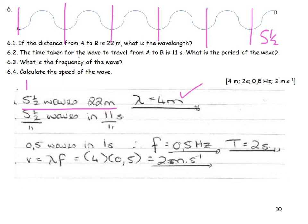The time taken for the wave to travel from A to B is 11 seconds. So 5 and a half waves take 11 seconds. What is the period of the wave? Remember what period is? It's time for 1 wave. So I need to make sure that I divide through by 5 and a half. I divide by 5 and a half on 11 seconds and I get 2 seconds.